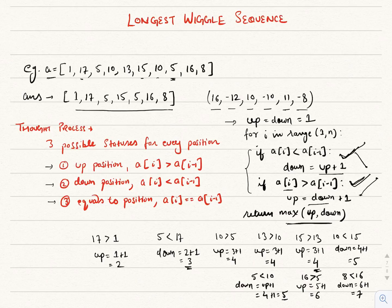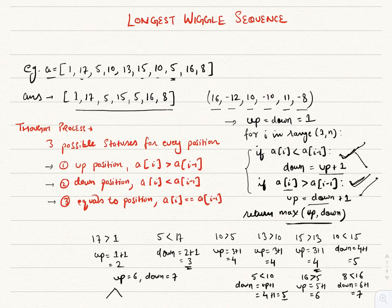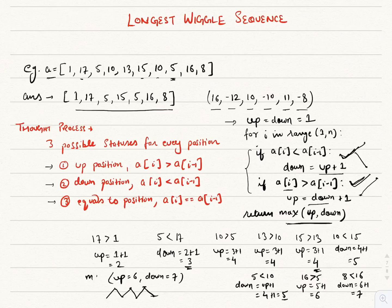At the end we return the max of up and down. We have up as 6 and down as 7. We went from down to up, then down, then up, then down. When we were in the up position the length was 6, and when we ended in the down position the length was 7. We return the max, which is 7. Hence for this sequence, and for other sequences, we can solve the problem this way.